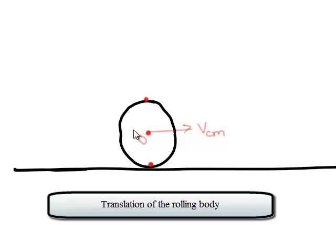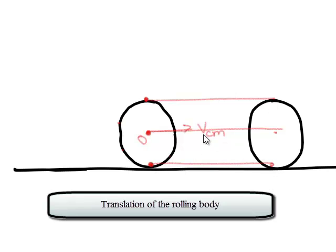What about the other points on the wheel? After a certain time interval, the point O and other points have all moved through the same distance in the same time interval T. So all the particles have the same velocity.